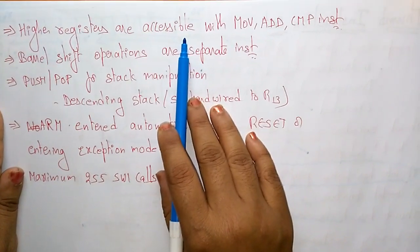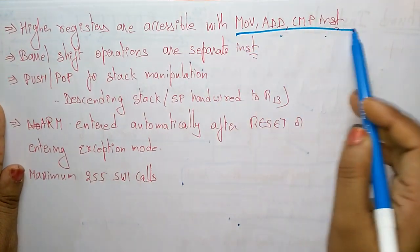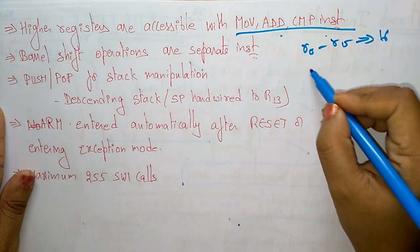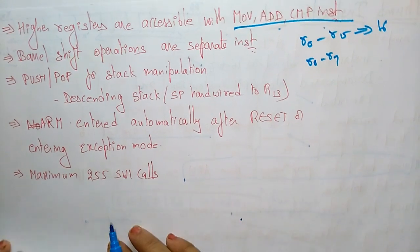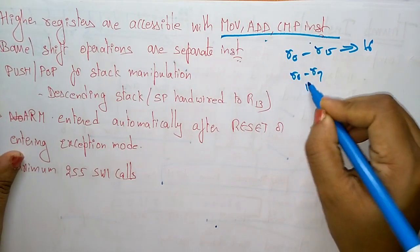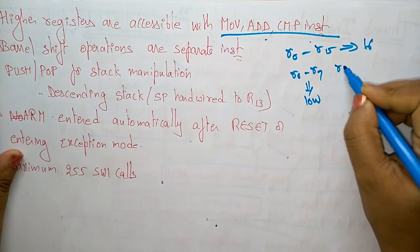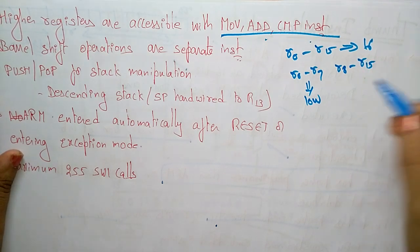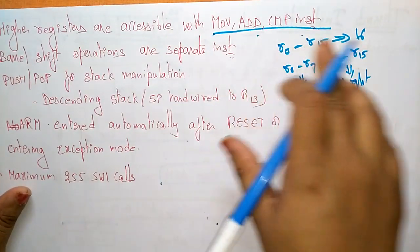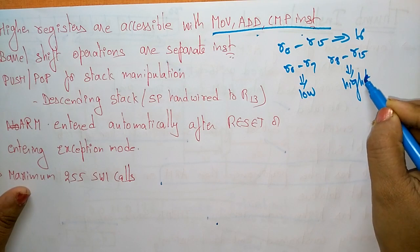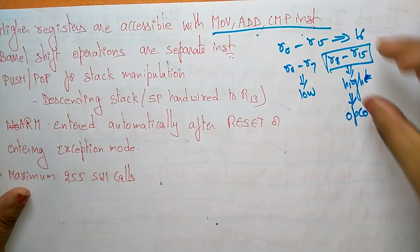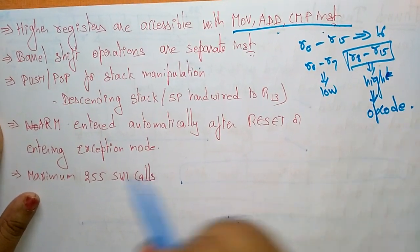The total registers R0 to R15 are 16 registers. R0 to R7 are the low registers, fully accessible by programmers. R8 to R15 are the high registers, and these are accessible only with move, add, and compare instructions. These high registers are preferred for op code operations.